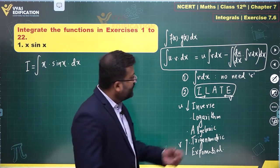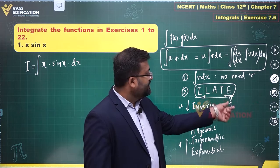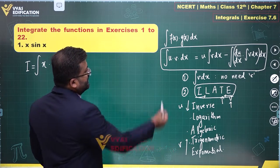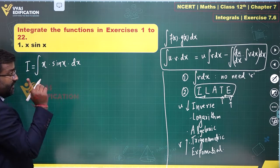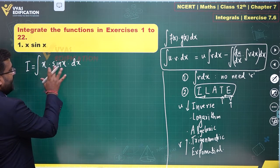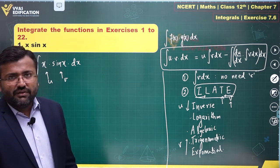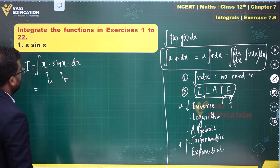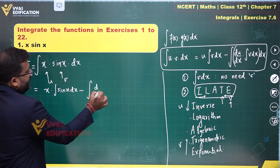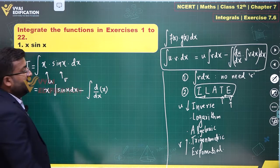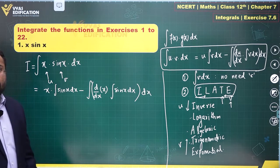If both functions are trigonometric and exponential, both are easy to integrate, but you take v as the exponential function and u as the trigonometric. That is the ILATE rule. For our first question, x·sin(x): algebraic and trigonometric, so sin(x) will be v and x will be u. The integral of u·v dx equals u times integral of v dx, minus the integral of (derivative of u times integral of v dx).